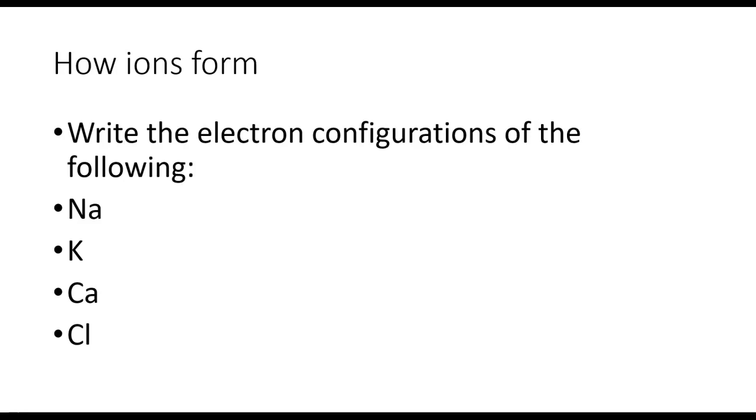When we start to look at how atoms and ions react, it's very important that we look at how electronic structure helps us determine the ionic structure of monoatomic ions. So a monoatomic ion is simply an ion that's formed from a single atom.